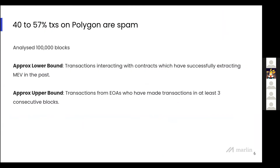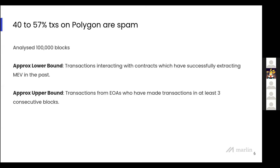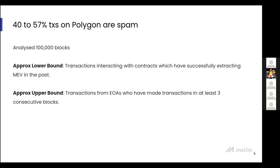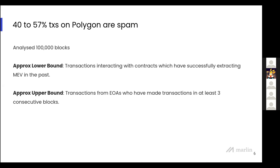Spamming happens on Polygon in the race to extract MEV. For a lower bound, we classified transactions that interacted with contracts known to have at least one successful chance of extracting MEV via arbitrages, over a span of 100,000 blocks — that's around 40% of transactions. On the upper end, isolating accounts that showed successful or unsuccessful transactions in at least three consecutive blocks gives us around 57%. So 40 to 57 percent is a huge spamming problem on Polygon PoS.